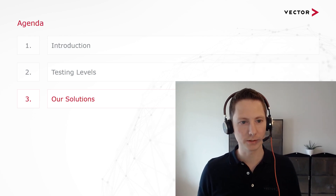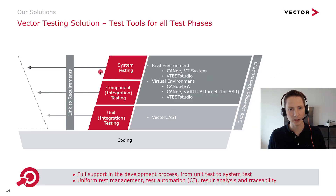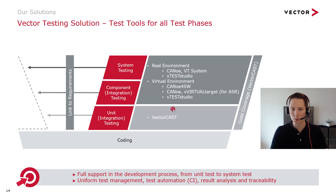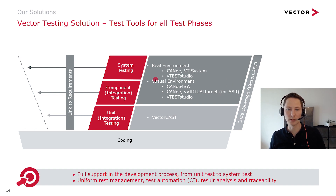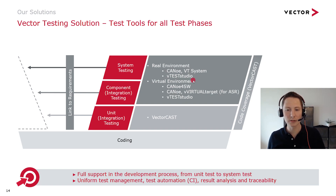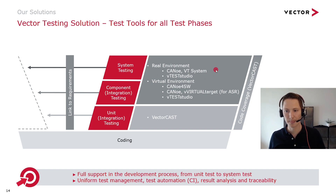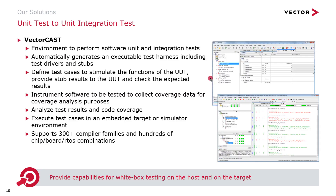Let's take a look at our solutions. Looking again at the different test phases — unit tests, component tests, and system tests — with the product VectorCast we can do unit tests and unit integration tests. When we go over to component and system tests, we can use CANoe for Software or virtual target and CANoe to run our application in a virtual environment. We can also use the VT system to connect our hardware device to CANoe in a real system test environment. And for all test phases, we can use VectorCast for code coverage.